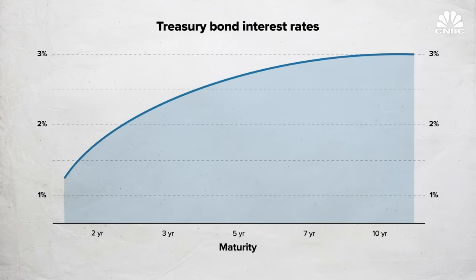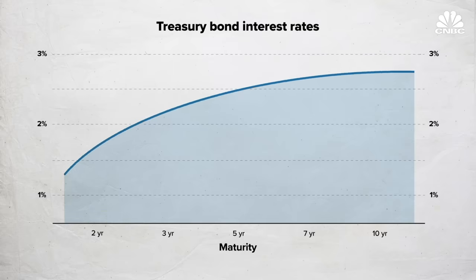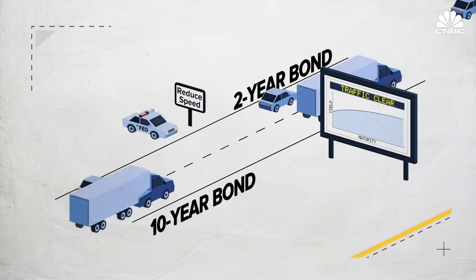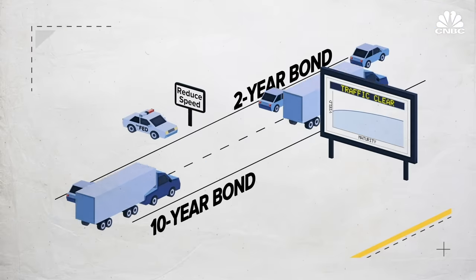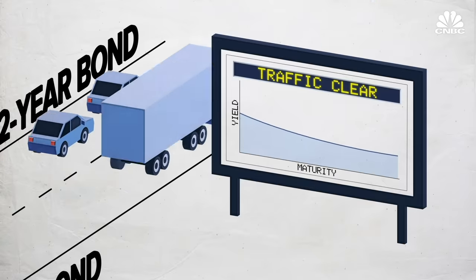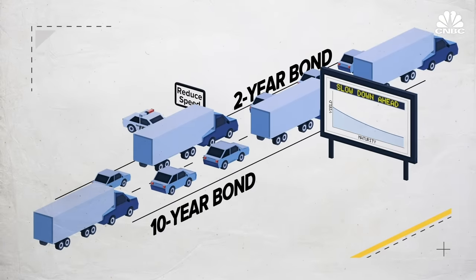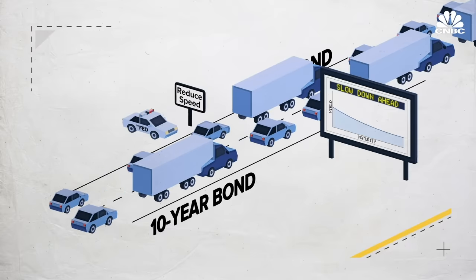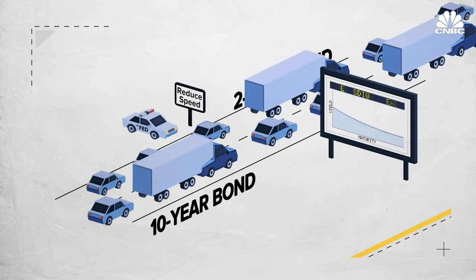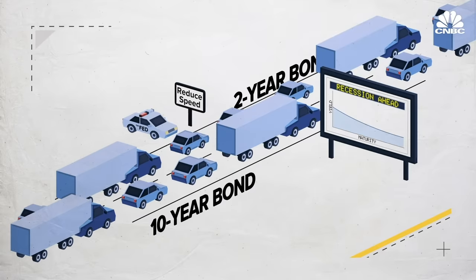The long-term interest rate is usually higher — investors are usually paid more to lend for a longer period of time. As the economy grows, you need the money you lend out to be worth more when you get it back. But the long-term outlook for the economy may not be changing much; those trucks chugging along may even speed up a little. When the trucks in the right lane are going faster than the cars in the left lane, that's the inversion we talked about earlier, and there's a good chance there's traffic ahead. It becomes more expensive to borrow for the short run than in the long run, which affects how people lend and the risks they're willing to take — and that can help drive a recession.